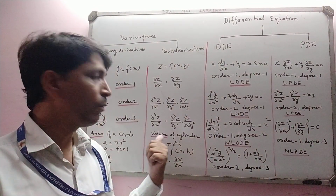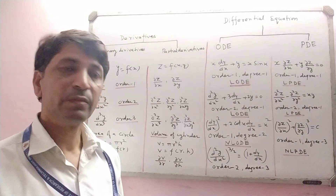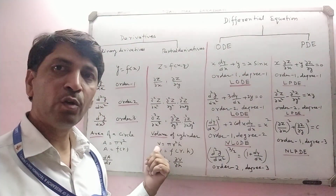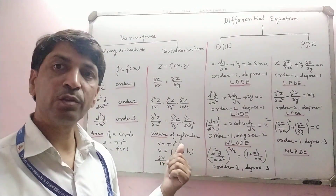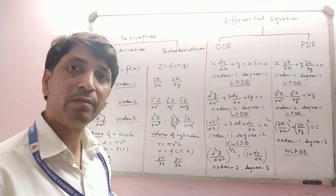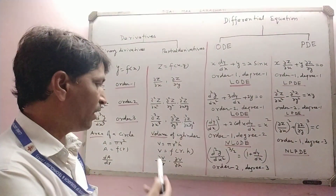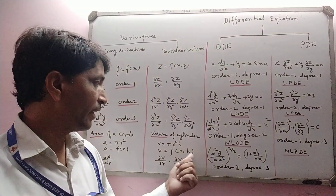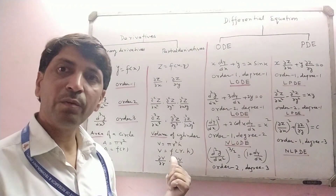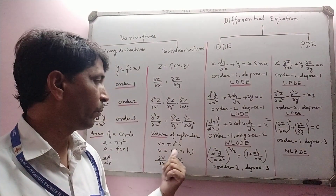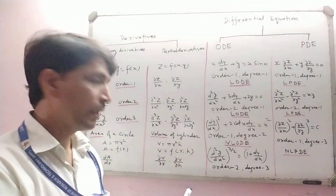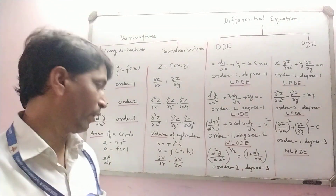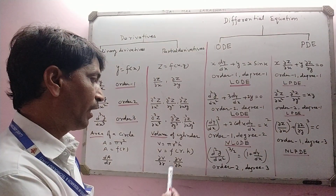Suppose the volume of a cylinder — we know its volume is V = πr²h, where π is a constant. Here V is a function of radius r and height h, so radius and height are independent variables and volume depends upon them. In this case we find two partial derivatives of order 1: ∂V/∂r and ∂V/∂h.